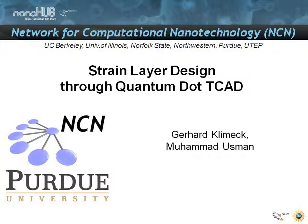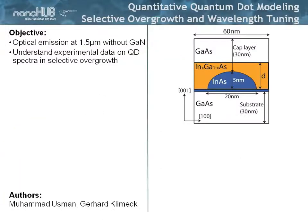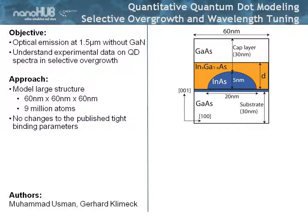In this presentation I would like to talk about strain layer design through quantum dot TCAT. I really want to show that NEMO3D can quantitatively predict and explain experimental data in quite complicated geometries. The idea is that experimentalists would like to achieve optical emission at 1.5 micron to get to the typical dispersionless fiber propagation, and they would like to do that in a quantum dot system based on arsenides rather than nitrides, because the nitrides have growth problems and a lot of defects.